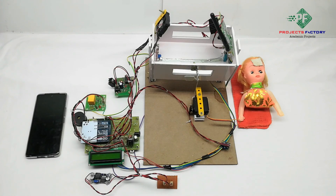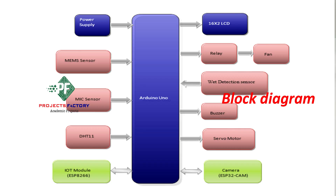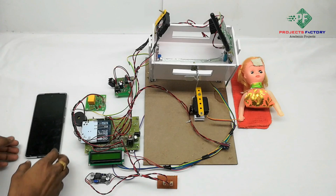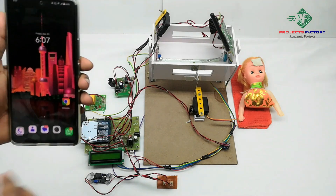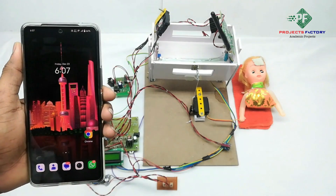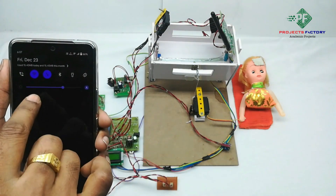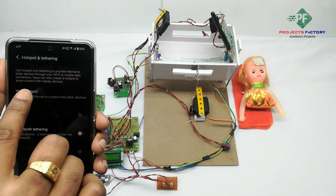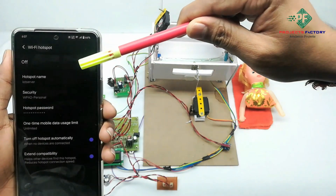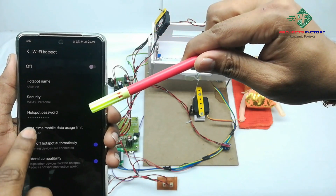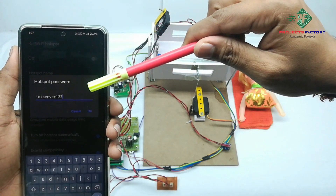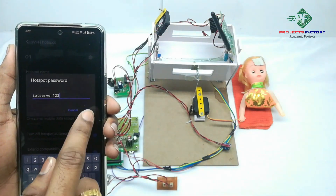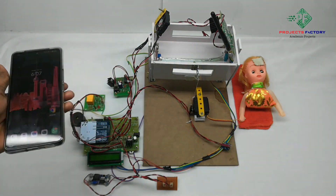Before starting this project, we have to create a hotspot on our mobile with username 'iot server' and password 'iot server123'. Open the hotspot settings and confirm the hotspot name is 'iot server' and password is 'iot server123'. The mobile should have internet through the same hotspot.